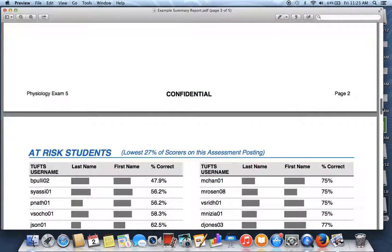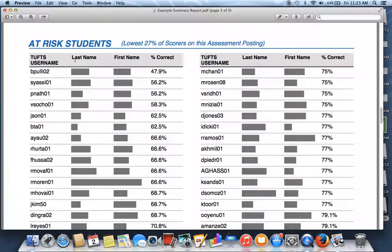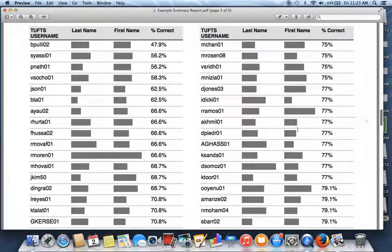So down below that, we have our at-risk students, or the lowest 27% of scores on this assessment posting. You can see I blacked out the names, but you'll have the username, the full name, and the percent that they got correct. This is also a handy chart if you want to immediately know how many failures you had in this exam.